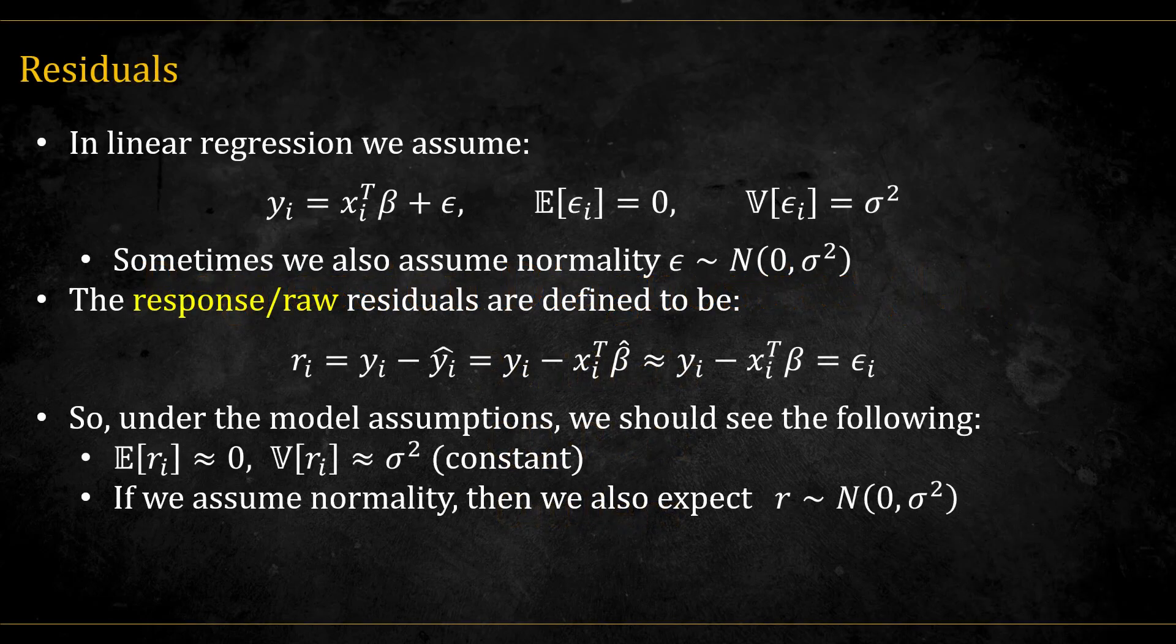In linear regression, we assume the following model that consists of a systematic component and a random component. We assume that the random component has a mean of zero and constant variance. Sometimes we also assume that it distributes normal.